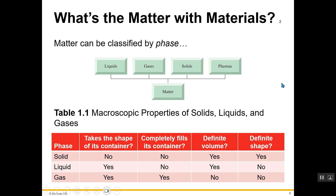Matter can be classified by their phase — or another term, state. You can have liquids, gases, and solids. There's also a fourth category you may or may not have heard of before, known as plasmas. Plasmas are basically gaseous ions, which means you need to know what ions are — we'll talk about that later on. All of these belong under the heading of matter.